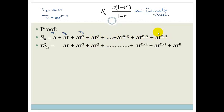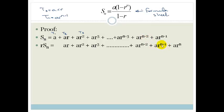Now what we do is multiply the sum by r. So a becomes ar, ar becomes ar squared, ar squared becomes ar cubed, ar to the n minus 3 becomes ar to the n minus 2, ar to the n minus 2 becomes ar to the n minus 1, and ar to the n minus 1 becomes ar to the power of n.